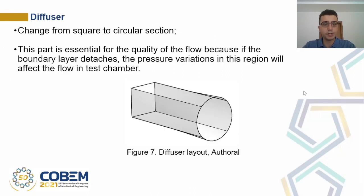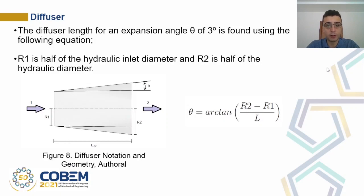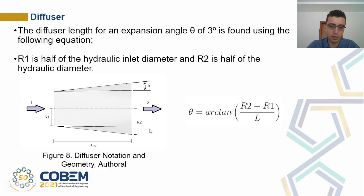The diffuser changes from a square to a circular section, where the square section is the test section and the circular one is where the fan is fixed. This part is essential for flow quality because if the boundary layer detaches, the pressure variations in this region will affect the flow in the test chamber. The diffuser length for an expansion angle theta is found using an equation where r1 is half of the hydraulic inlet diameter and r2 is half of the hydraulic outlet diameter.